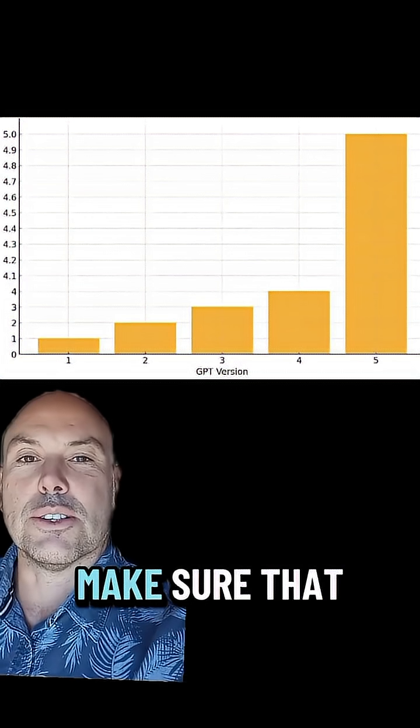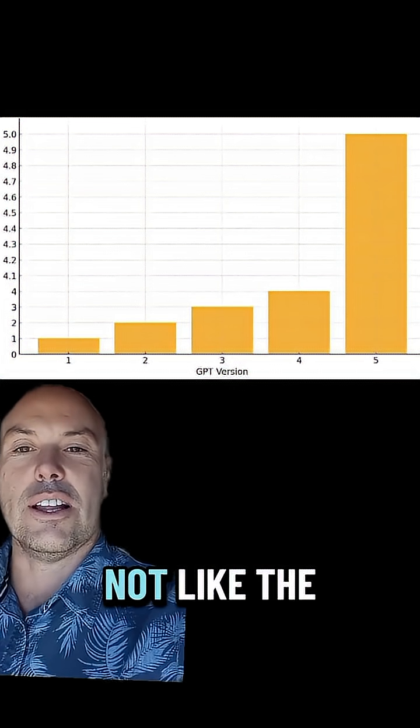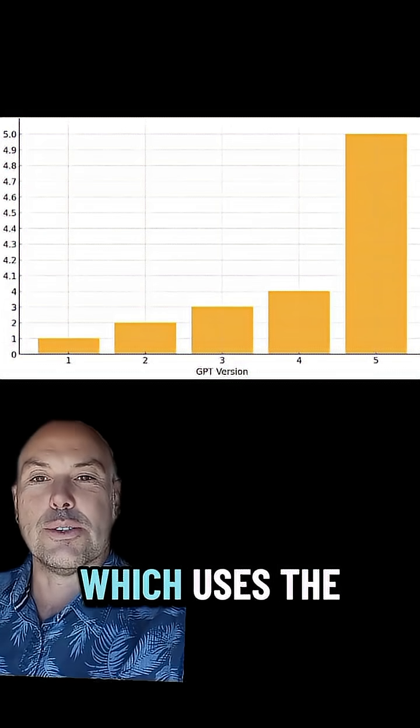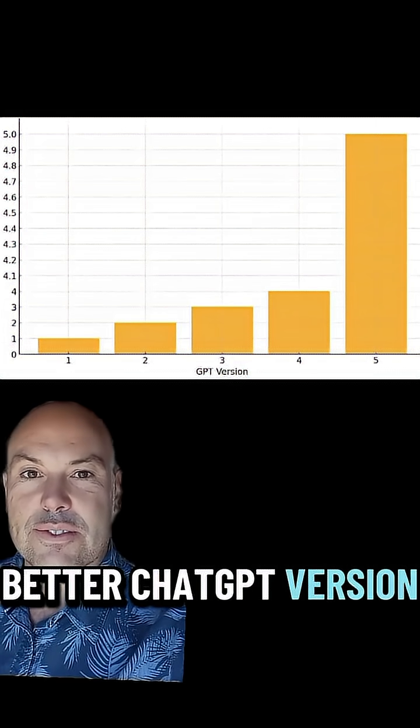And tip four, make sure that the axis is actually equally spread out, not like the example above which uses the decimal place to show how much better ChatGPT version 5 is.